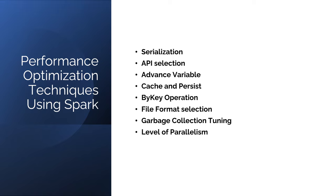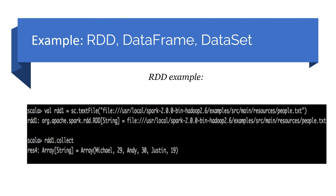Spark provides three types of APIs: RDD, DataFrame, and DataSet. RDD is used for low-level operations with less optimization. In code, RDD1 reads a text file, and then RDD1.collect() retrieves the list of data present in that text file. This is the basic format by which RDD operations take place.